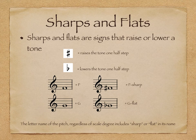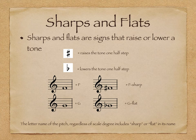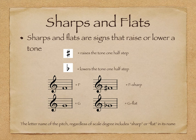So, what are sharps and flats? These are signs that raise or lower a tone. Importantly, they also change the letter name — the name of the pitch regardless of its scale degree — and it will always include sharp or flat. For example, we have F, and if we add a sharp to it, we'll be calling it F sharp. And if we have a G and we add a flat to it, we'll call it G flat. Knowing the names of sharps and flats, we can build scales on any pitch or any scale degree.